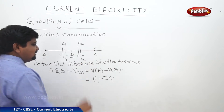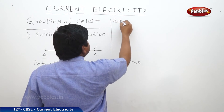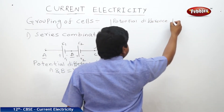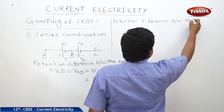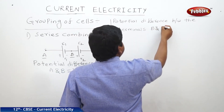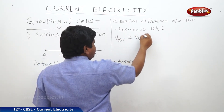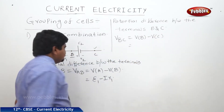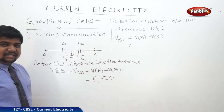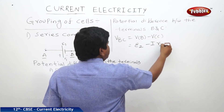Then, what is the potential difference between the terminals B and C? The potential difference between B and C, VBC, is VB minus VC. At C also, there is no potential. But between B and C, one cell is connected — that is a cell of EMF E2 and internal resistance R2. That means it will be E2 minus IR2.